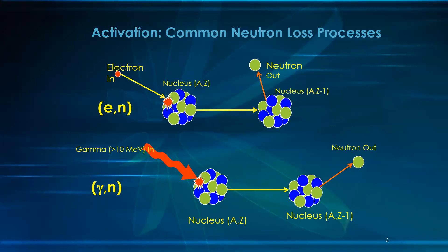These are the processes that occur in the gantry head outside the gantry in air. The electron is captured by the nucleus and could emit neutrons, or gamma rays — photons greater than 10 MeV — can interact with the nucleus and produce neutrons. These are called neutron loss processes.